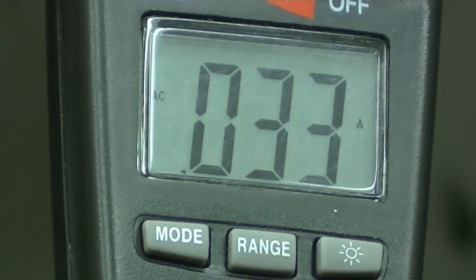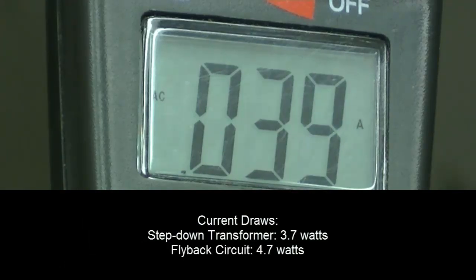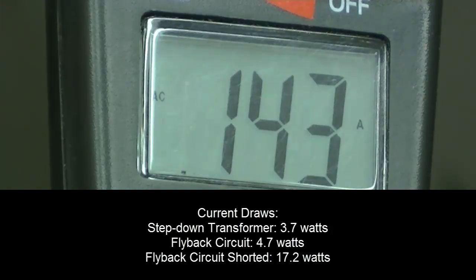The transformer's completely off. And it's already pulling 0.03 amps. Turn it on. 0.039. And now I'll completely short it out. 0.142.